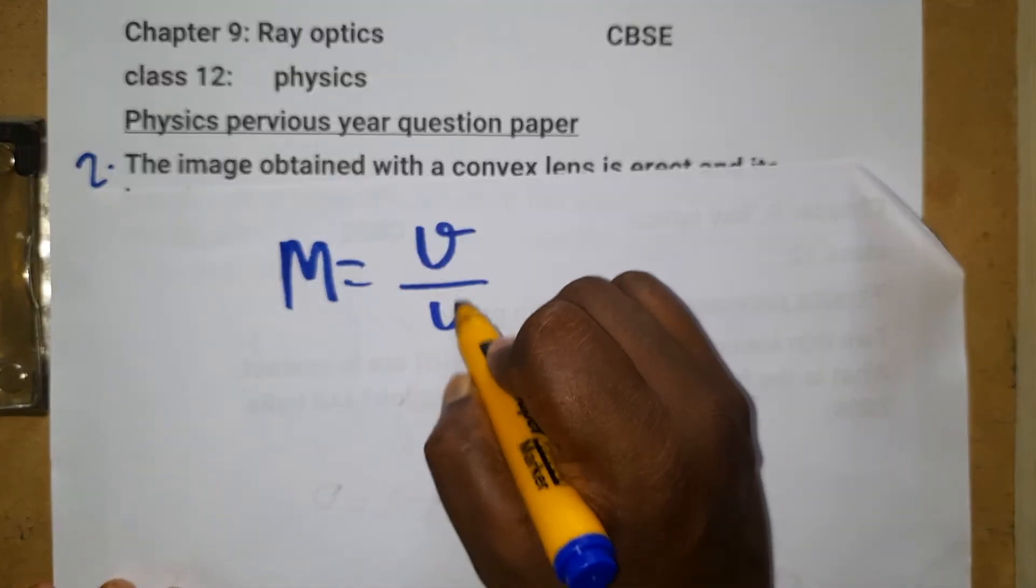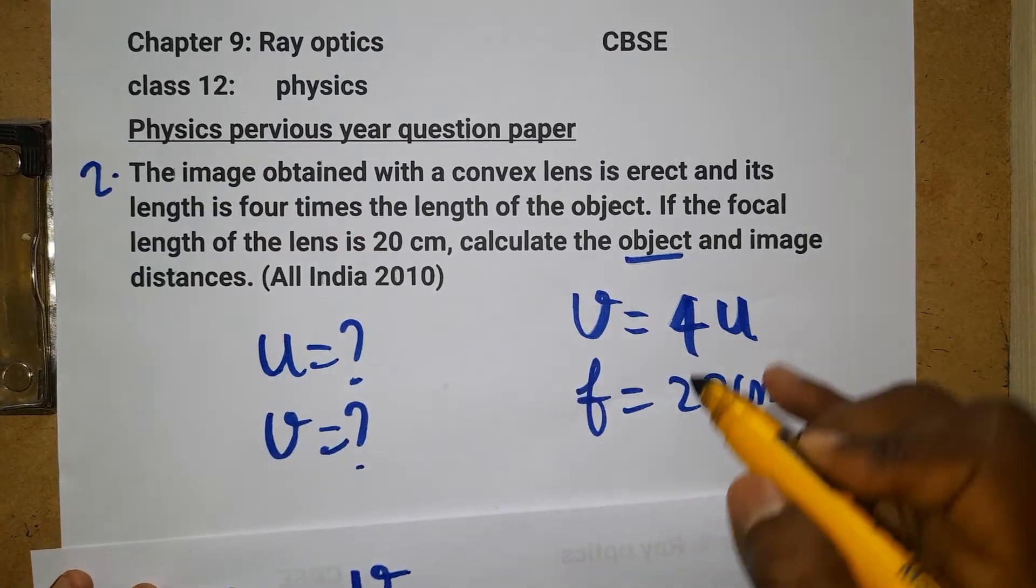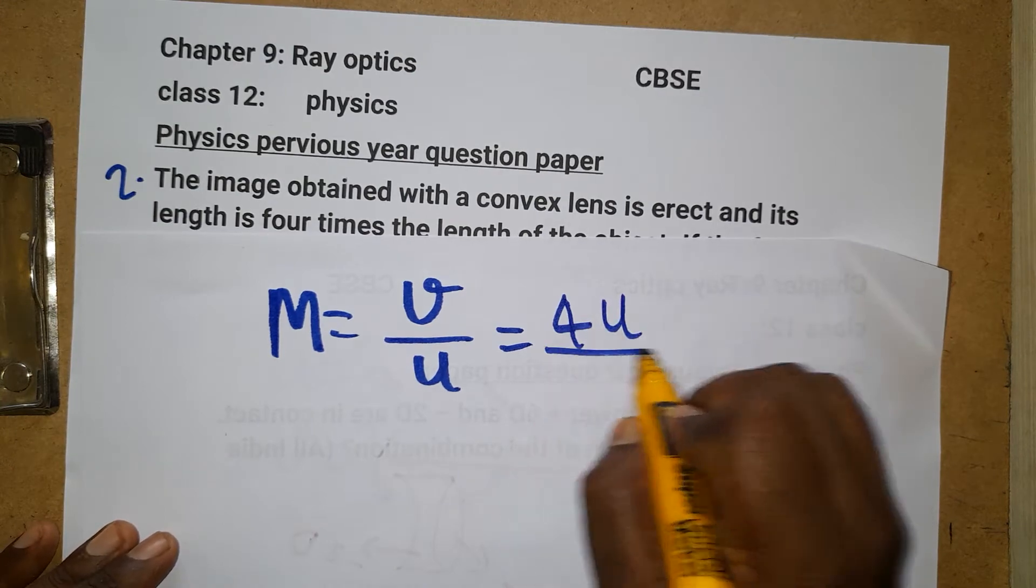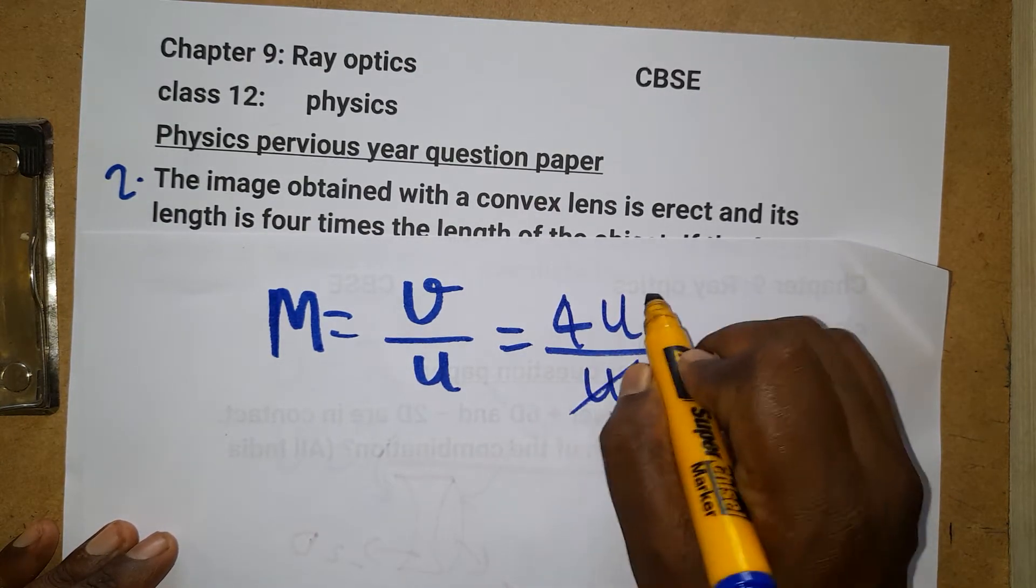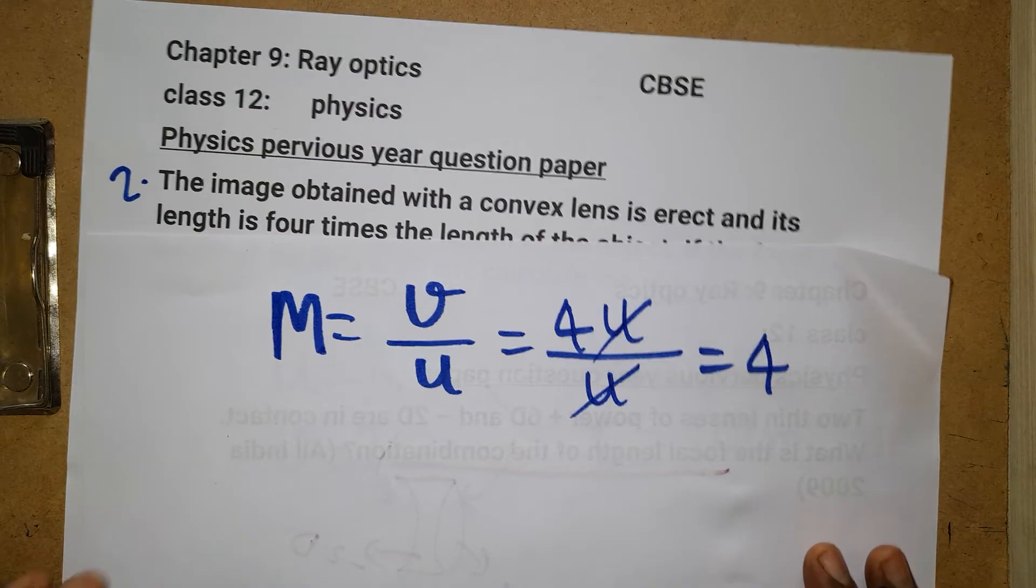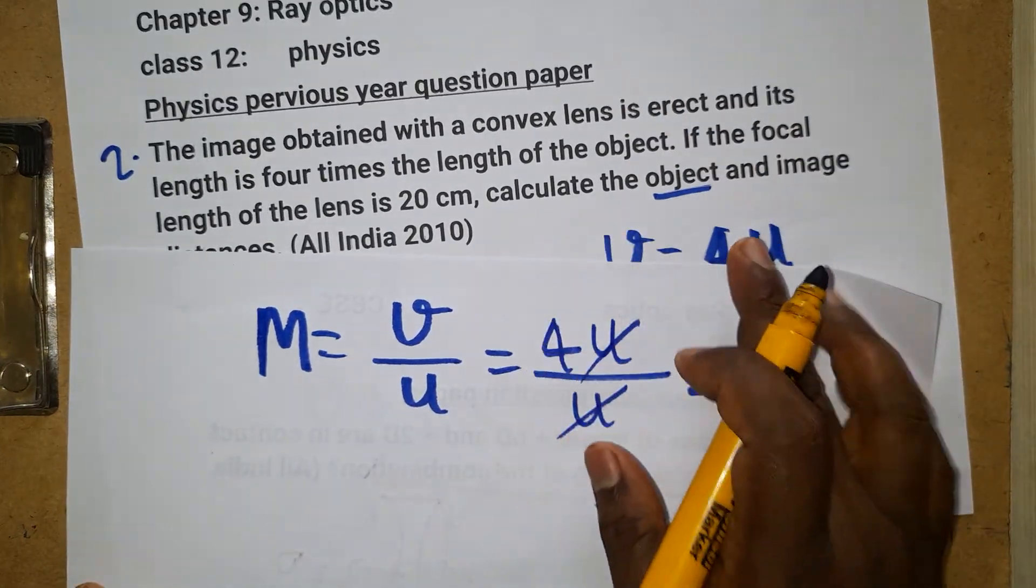As we know, v is 4 times u, so 4 times u divided by u. Cancel cancel, it's going to be 4. Magnification we can call as 4.